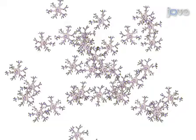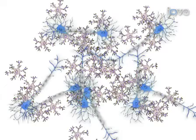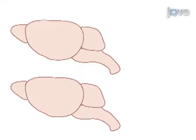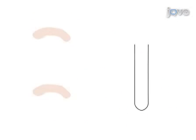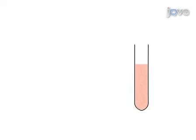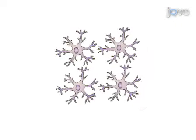In the first part of this video, we will demonstrate how to prepare the astrocyte neuron co-culture. To do this, several hippocampi from P1 rats are collected into a tube, digested with papain, and dissociated by trituration.